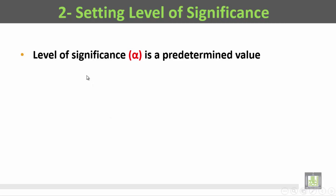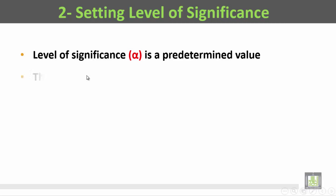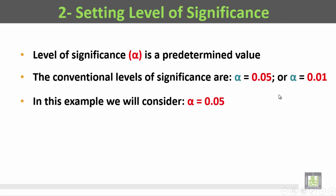The second step is setting the level of significance, or alpha. The level of significance is a predetermined value; the conventional levels are 0.05 or 0.01. In this example, we will consider alpha to be 0.05.